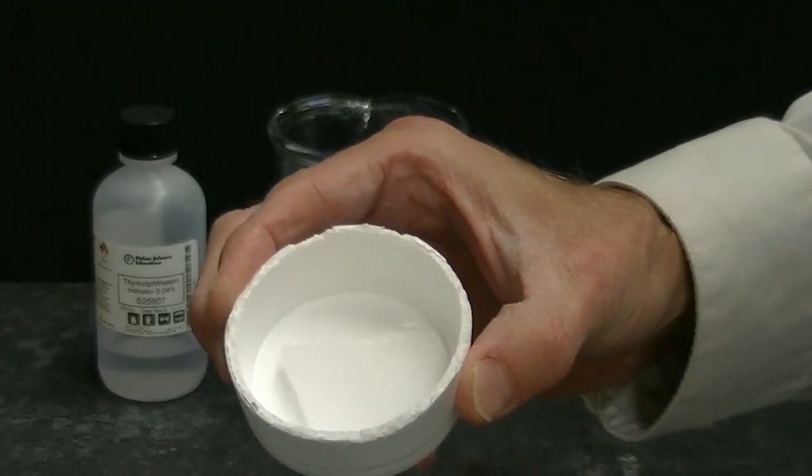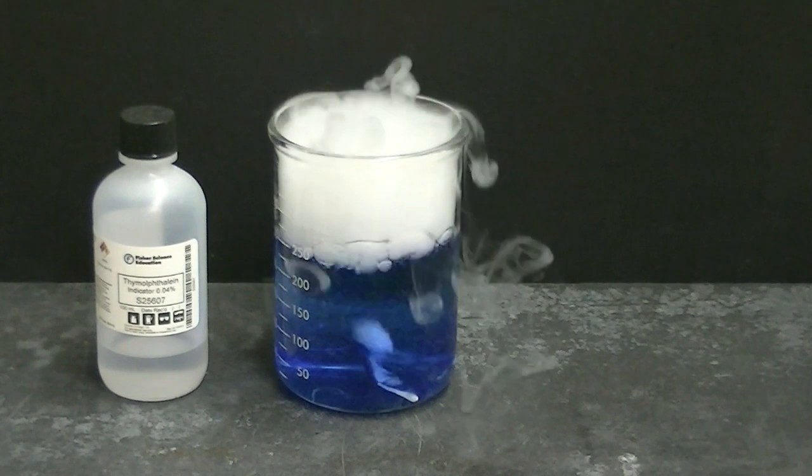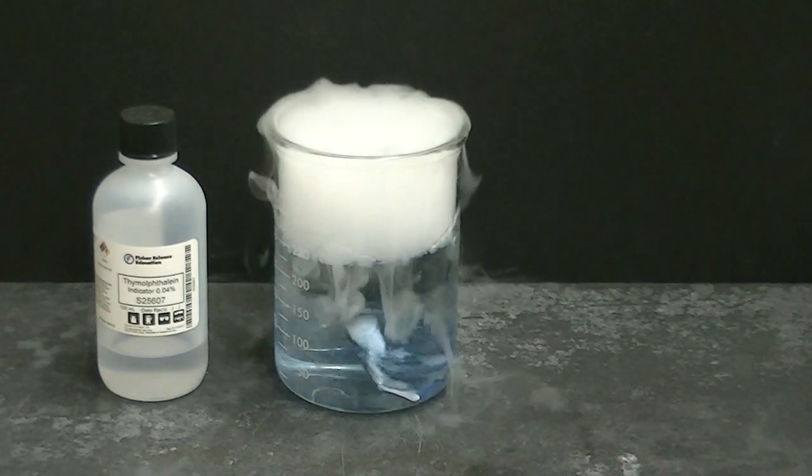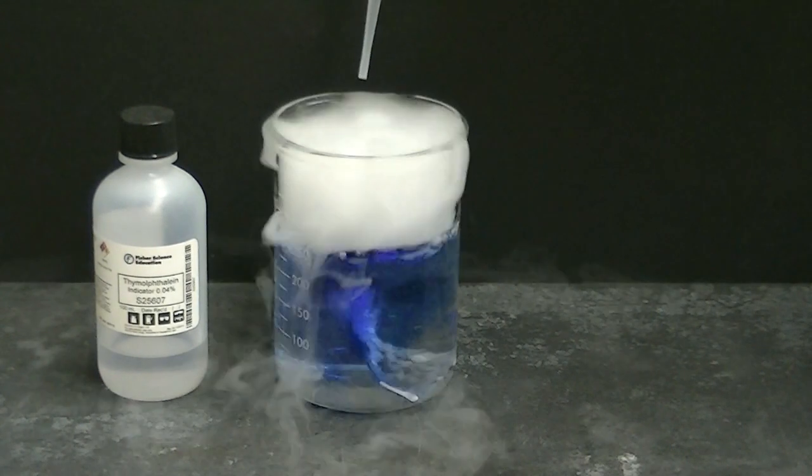Let's add some dry ice to the beaker. Remember, dry ice is solid carbon dioxide. Hey, look, the color disappears. And if I add base, the color returns again.